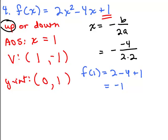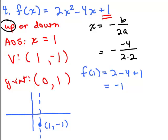Keep in mind why this is helpful. You know the axis of symmetry is at x equals 1 and the parabola goes up, so the vertex is at (1, negative 1). The y-intercept is at (0, 1), and because of the axis of symmetry, you know there's a corresponding point on the other side. So the y-intercept makes it easy to find another point on the other side of the axis of symmetry, as long as the axis of symmetry isn't the y-axis itself.